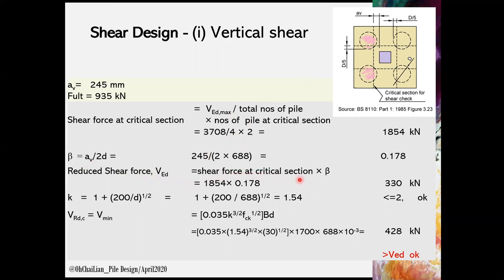The VED is to check against and shall be lesser than the shear resistance in concrete. Shear resistance of the concrete VRDC is based on the minimum shear V minimum using the equation shown. It is to note that the limiting value for K is 2. In this case, VRDC is 428 kN, sufficiently catered to the VED of 330 kN.